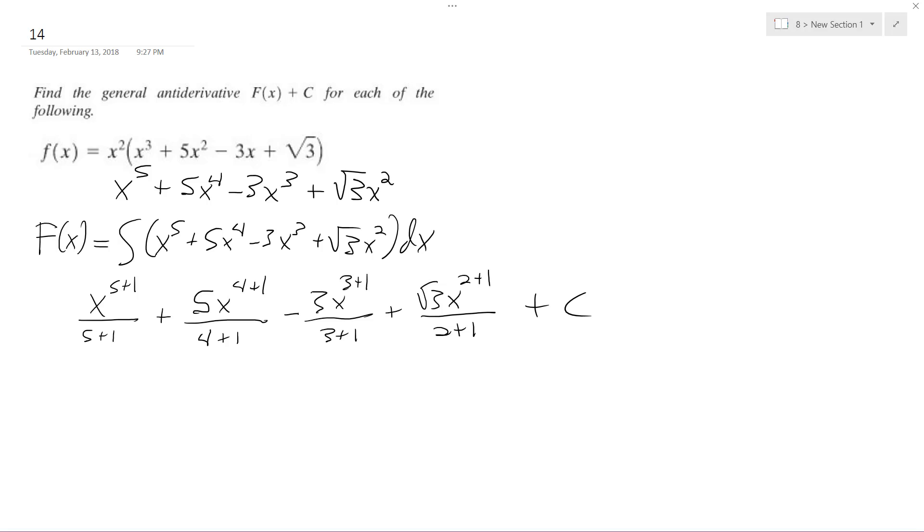All right, so we're not finished quite yet. Still got to add these up. So I'll ultimately end up with x to the sixth over 6. Capital F of x equals x to the sixth over 6 plus x to the fifth minus three fourths x to the fourth plus square root of 3 over 3 x to the third plus C.